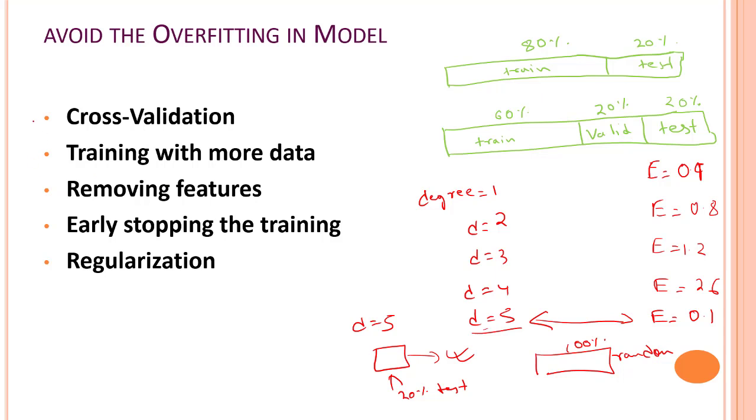Second thing that we can do over here is training with more data. If your model is overfitting, then putting in more data will help your model to just work out with high variance problem.